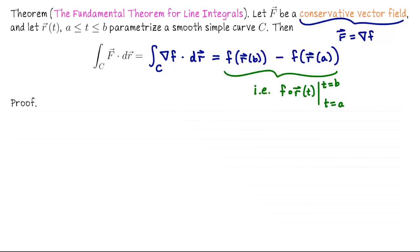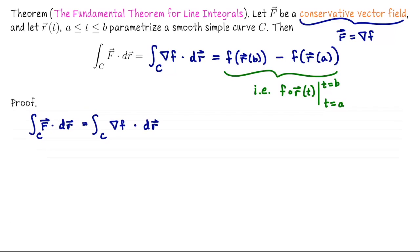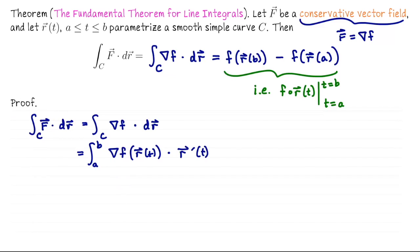Let's do the proof — it's a neat little computation. We want to compute the vector line integral of capital F dot dr. We take our vector field capital F and replace it with the gradient of little f. This is still in the general form for vector line integrals, but now let's do the computational form: the integral from a to b of the gradient of f evaluated along the parametrization r(t) dot the velocity vector dt.